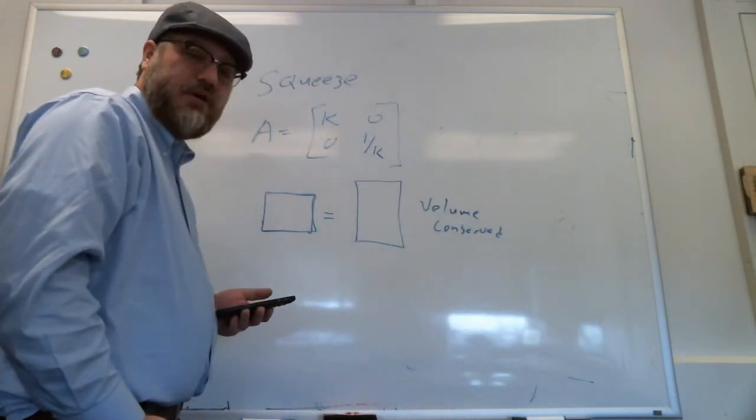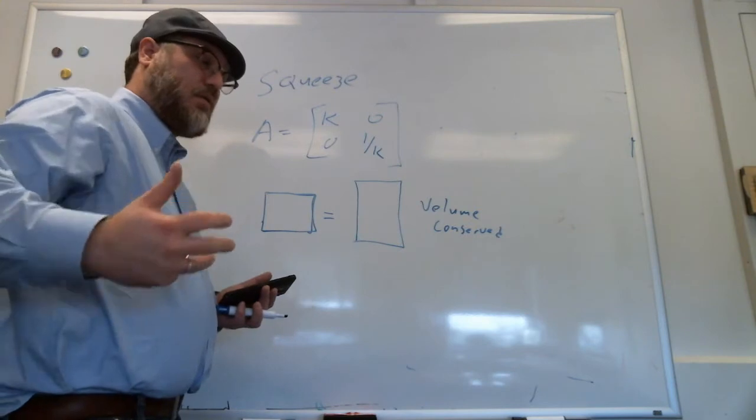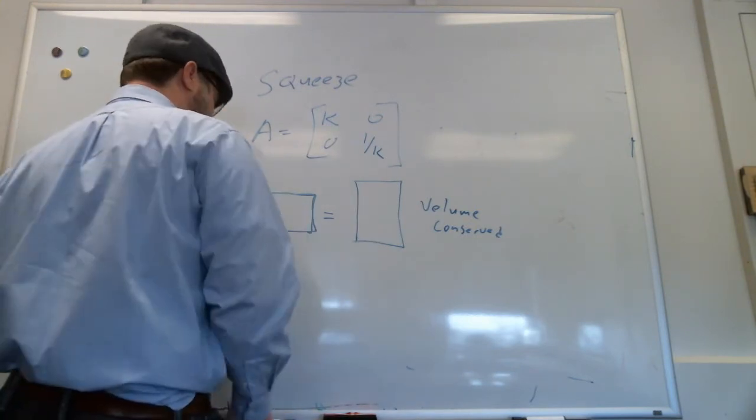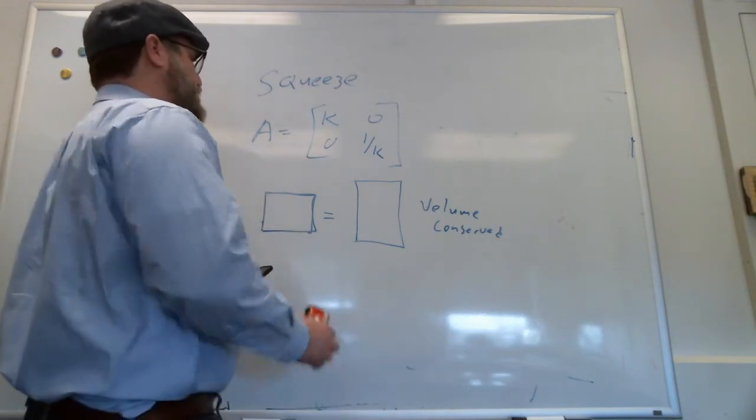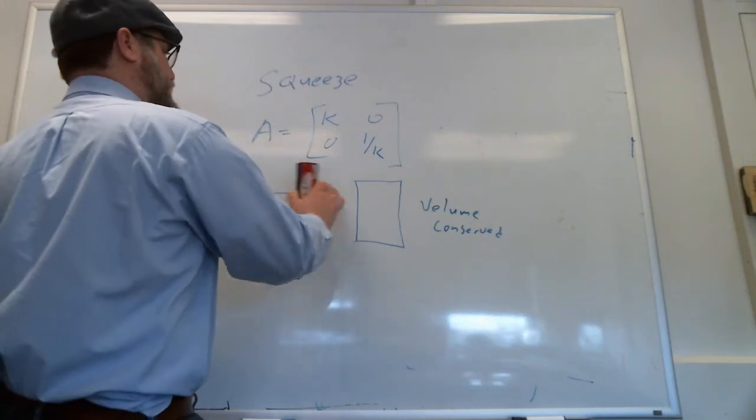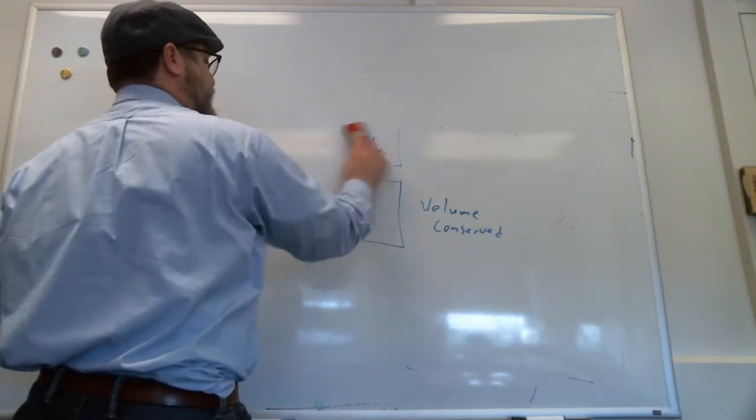Right? And that's very important in plasticity. We know that crystal plasticity or deformation by dislocation slip is a volume conserving operation. So if we want to describe that operation mathematically, we need to make sure that we have a form that looks like this.